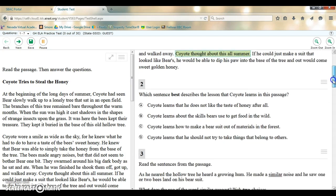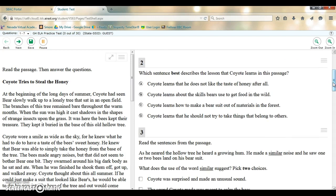The second type of question that you'll see is a multiple choice question. In this multiple choice question we're just looking for one correct answer, which sentence best describes the lesson that Coyote learns in the passage. You will select the letter of the answer that you believe is correct. You can see it fills it in.